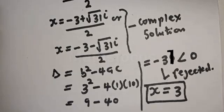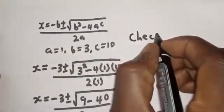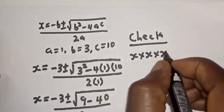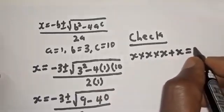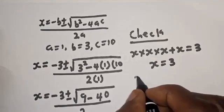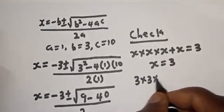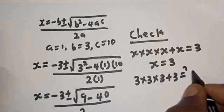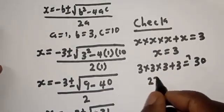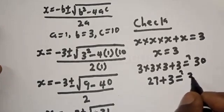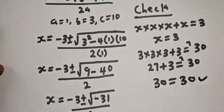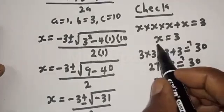Let's check: s multiplied by s multiplied by s plus s equals 30, with s equal to 3. That is 3 times 3 times 3 plus 3: 3 times 3 is 9, times 3 is 27, plus 3 equals 30. So 27 plus 3 equals 30, which satisfies the given equation. Therefore s equals 3 is confirmed.